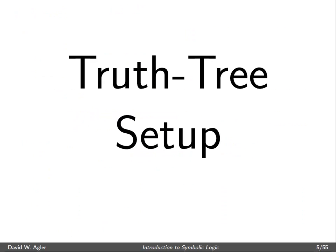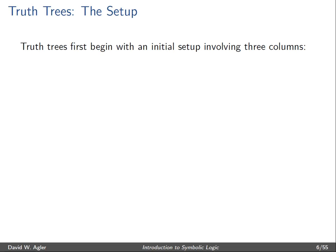The next thing I want to discuss is how to set up a truth tree. Typically, truth trees begin with an initial setup involving three columns. The first column is a simple column for numbering. It's a column that we'll use to number each one of the formulas or propositions in the tree so we can refer back to it easily.